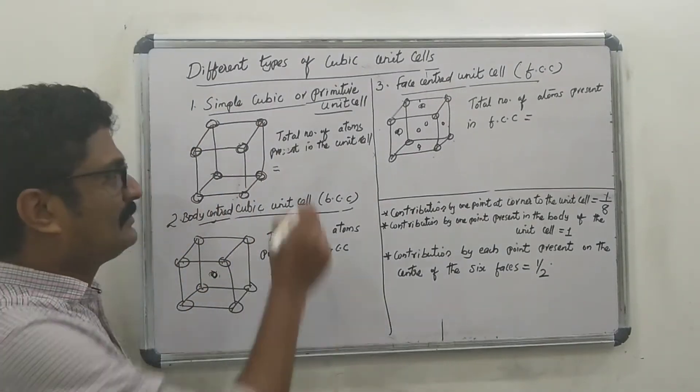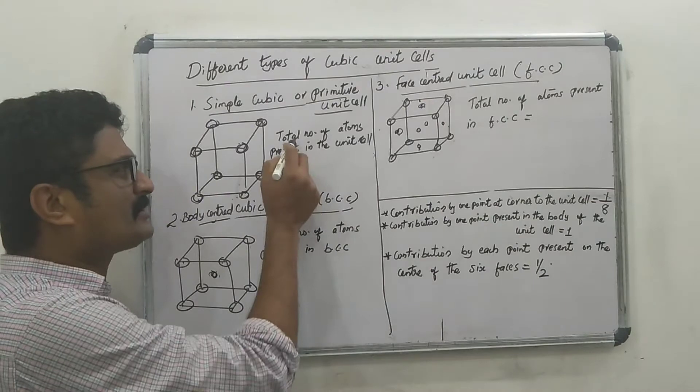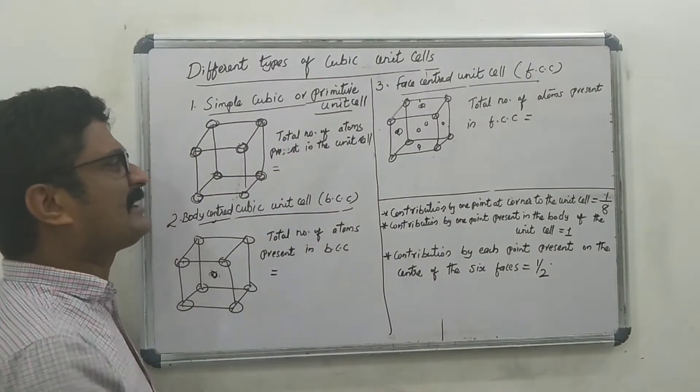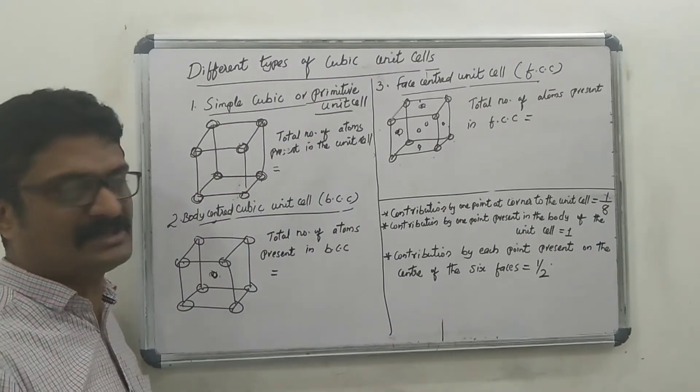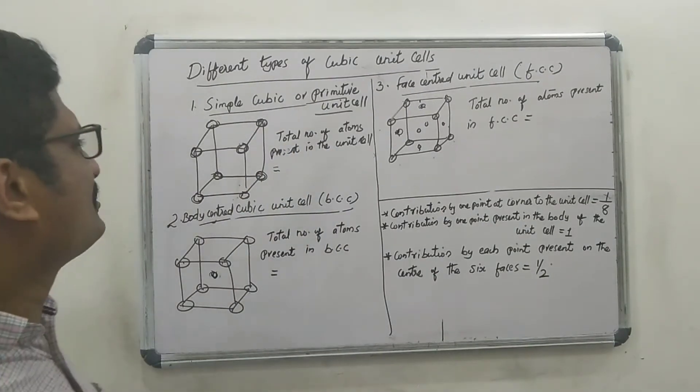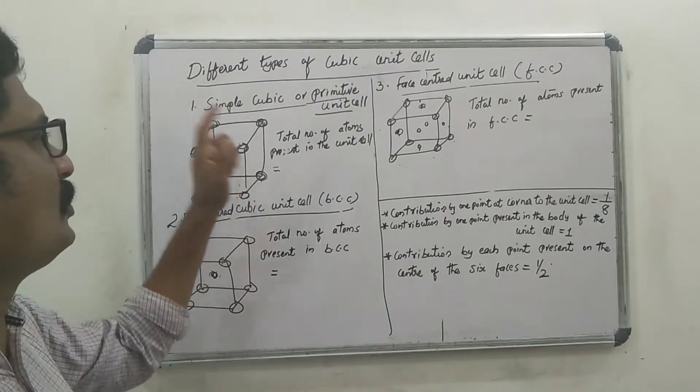The next point is the total number of atoms present in the unit cell.